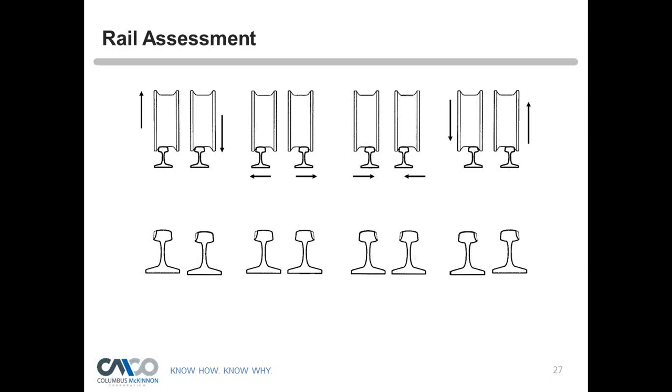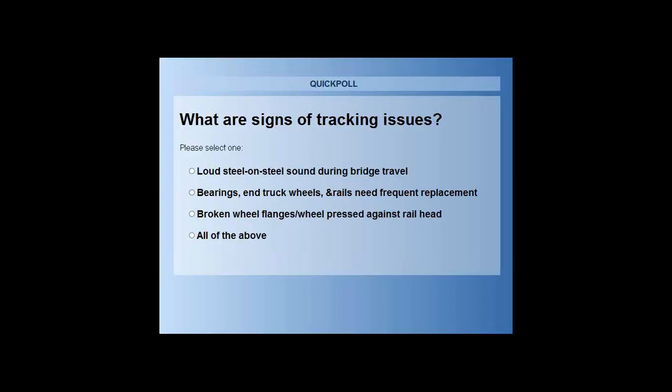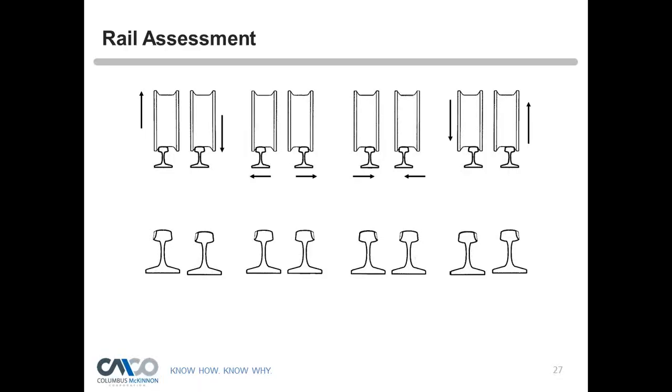A polling question is conducted: what are the signs of tracking issues? Options include loud steel-on-steel sound during bridge travel, bearings and truck wheels and rails needing frequent replacement, broken wheel flanges and wheels pressed against the rail head, or all of the above. Of those who voted, 100% correctly answered all of the above — which matches the very first slide covered at the start of the webinar.